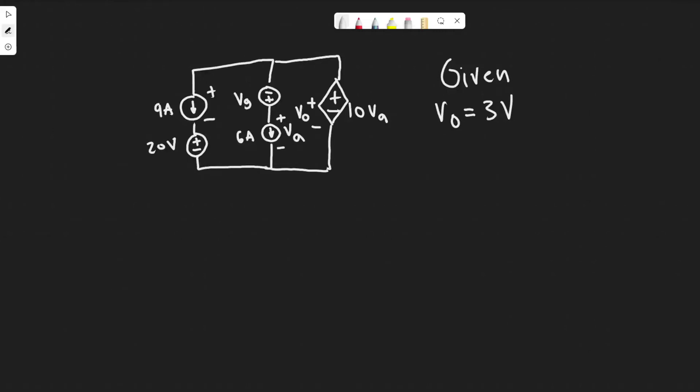In this problem, we're told to consider the circuit in this figure, and we're going to assume that V sub 0 is equal to 3 volts. What we're going to be solving for is the total power developed in the circuit. To do this, the first thing we want to do is solve for basically every single variable in this circuit.